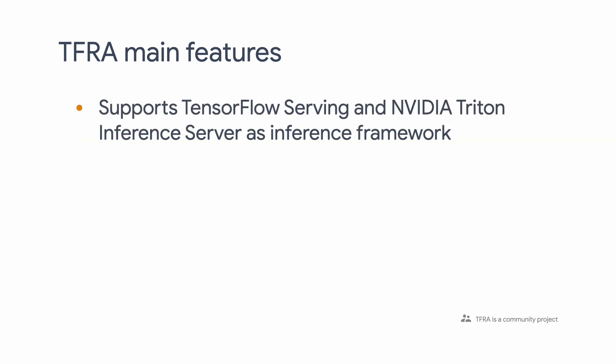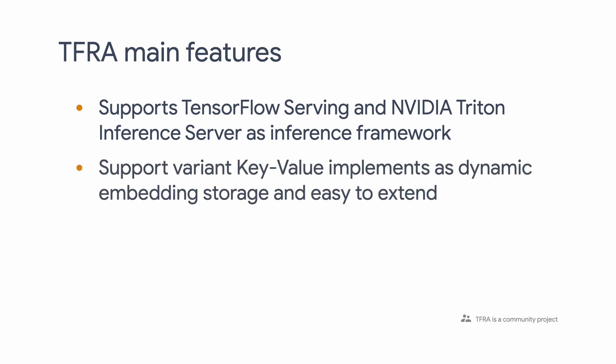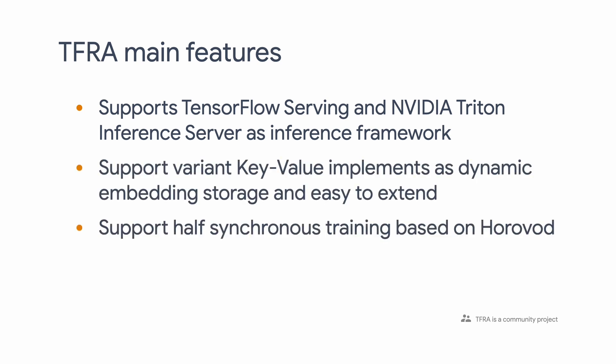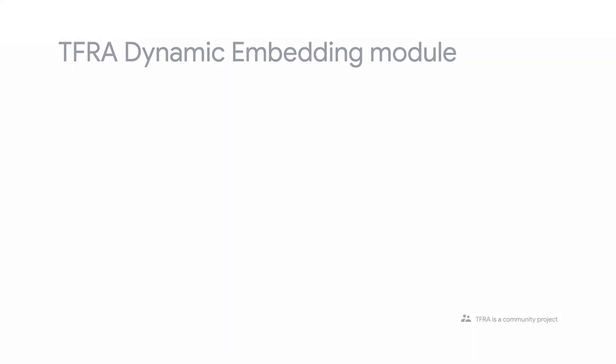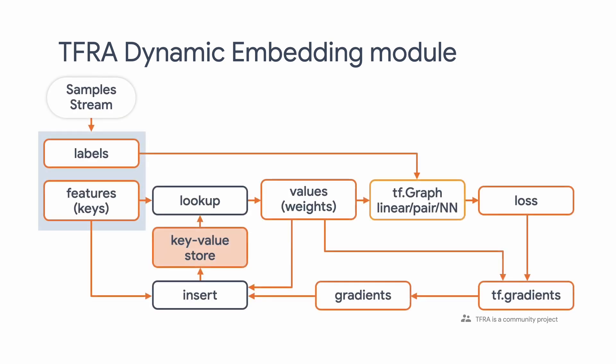TFRA is fully TensorFlow 2 compliant and supports all the TensorFlow native components, such as optimizers, initializers, saved model, and so on. There are two sub-modules inside TFRA: dynamic embedding and embedding variables. We're going to focus only on dynamic embedding today.